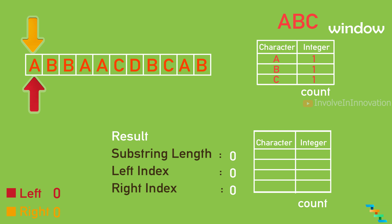Let's walk through the example. Consider string t is 'abc'. Load it to the hash table 'window'. The window hash table now contains three entries: a, b, c each with count 1. Assign the left and right index positions to the 0th index in string s. Get the right index value which is 'a' and add it to the minimum window hash table. Check whether this hash table contains all the characters in the window hash table — it does not.